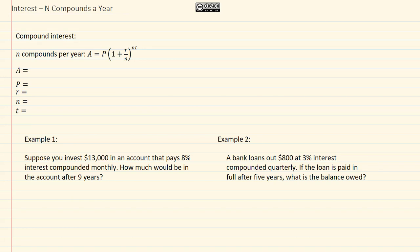Interest in compounds a year. Compound interest is basically interest on interest. Our formula that we're going to use is A equals P times the quantity of one plus r over n to the nt.